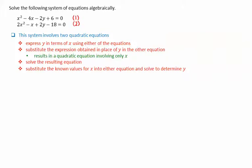I will call the top equation equation 1, and the bottom equation equation 2. I'll take equation 1 in order to solve for y. This gives y equals x squared minus 4x plus 6 over 2.